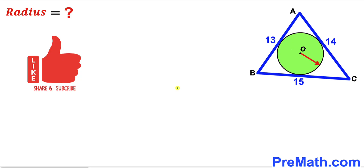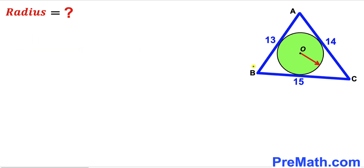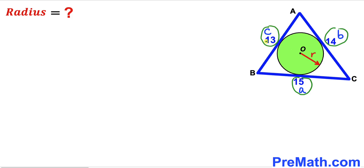Please don't forget to give a thumbs up and subscribe, and please keep in mind that this figure may not be 100% true to scale. I am going to label the radius of this green shaded circle as lowercase r. I'll label side BC as lowercase a, side AC as lowercase b, and side AB as lowercase c, so a = 15, b = 14, and c = 13. We are dealing with a circle inscribed in triangle ABC, so this radius is called the inradius.